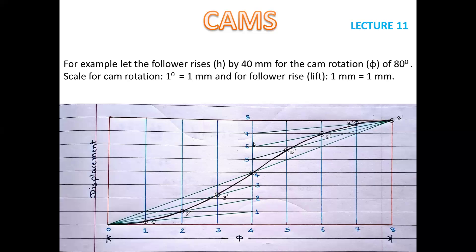Now take the middle line — the vertical line passing through point 4 — and divide it into the same equal even number of parts. We divided the horizontal line into 8 parts, so divide the vertical middle line into 8 parts as well. The height of the rectangle is 40 mm, so mark every 5 mm: 0, 1, 2, 3 up to 8. So this vertical middle line is also divided into 8 equal parts.